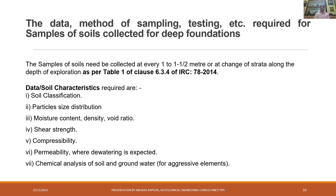As per Table 1 of Clause 6.3.4 of IRC 78-2014, samples need to be collected at every one to one and a half meters, or at change of strata along the depth of exploration, or as directed by the engineer in charge. The required soil characteristics are: soil classification, particle size distribution, moisture content, density and void ratio, shear strength, compressibility, permeability, and chemical analysis of soil and groundwater.